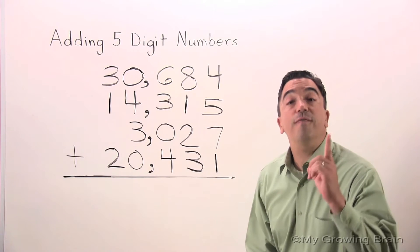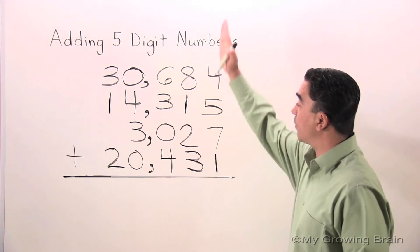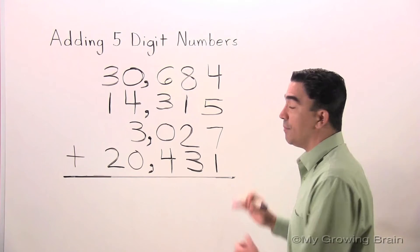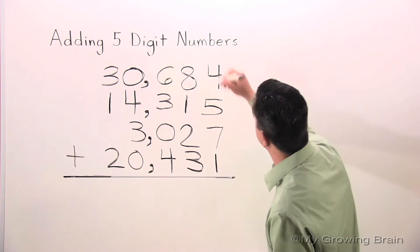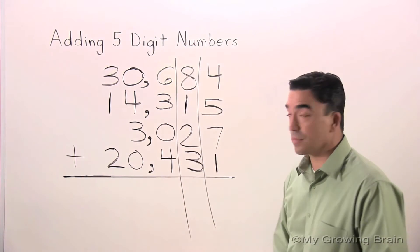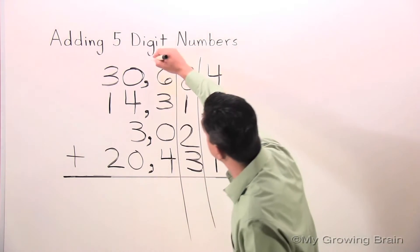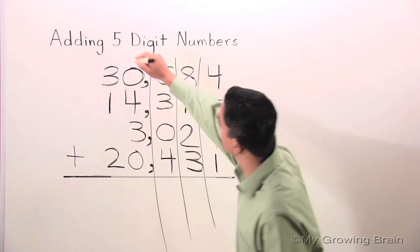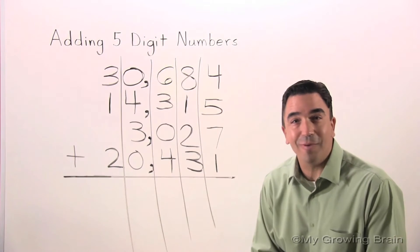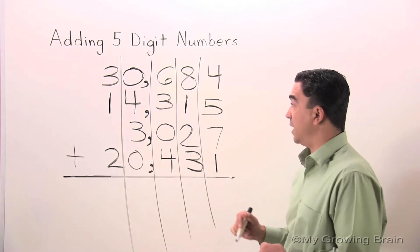So, the first thing I'm going to do is draw lines to separate my digits to keep my work organized. Couple more. All right, here we go. We're going to start with the ones place.